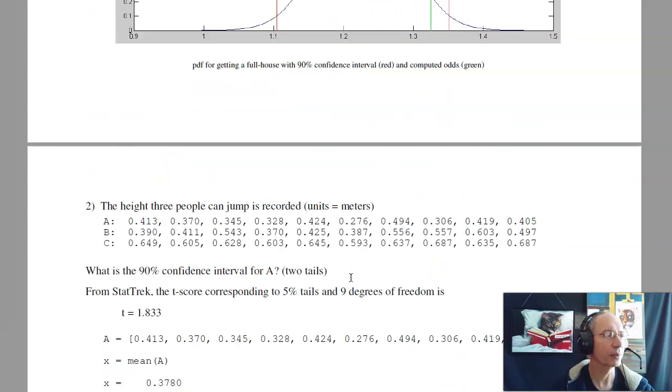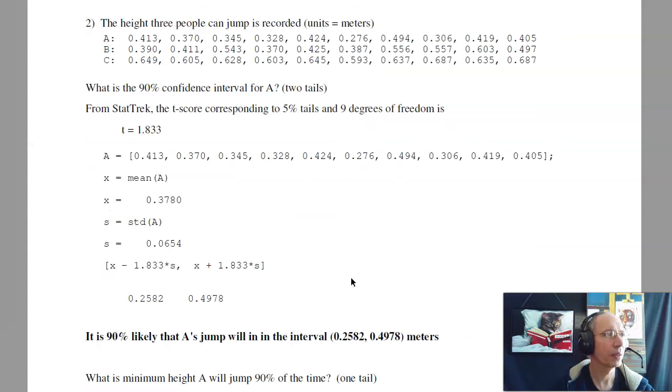So that's problem number one. Problem number two. Here's some data from embedded systems. Three people jump and they measure their vertical leap. Just given person A, what's the 90% confidence interval for the height of their next jump, or the height of each jump? So with that, given the data, find the mean, find the standard deviation.